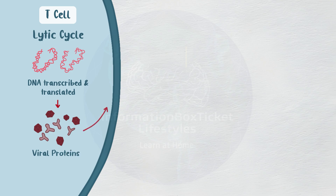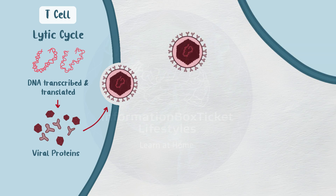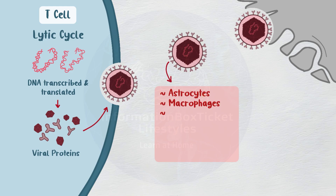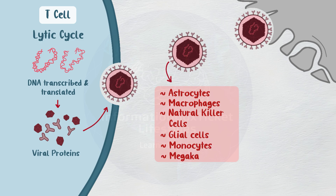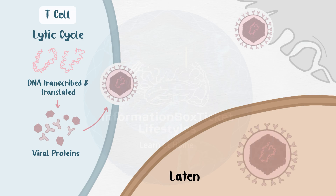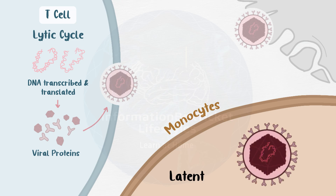These proteins are then packaged into new virions that may infect nearby cells after the original cell is killed. Though not as effectively as within T cells, the virus may also replicate in a wide range of other cells, including astrocytes, macrophages, natural killer cells, glial cells, monocytes, and megakaryocytes. Lastly, HHV-6 has the ability to enter a latent state in monocytes, where it simply resides inside the cell rather than causing any harm.